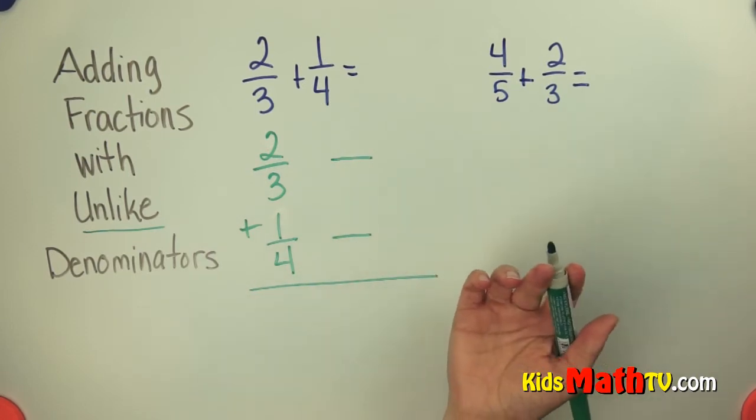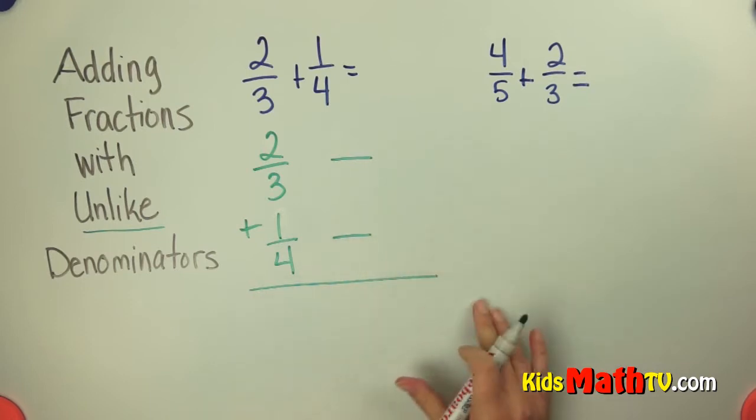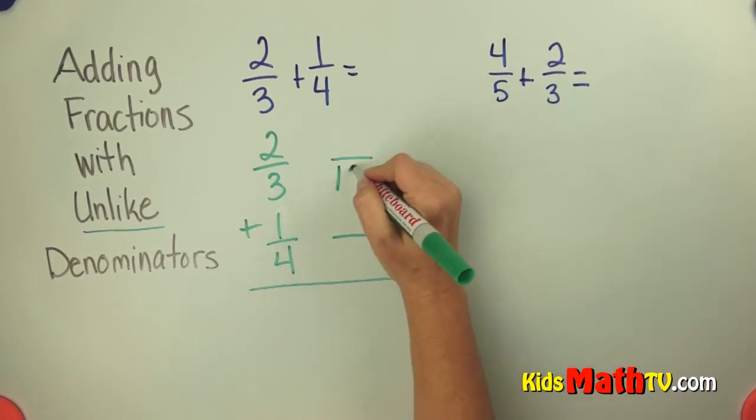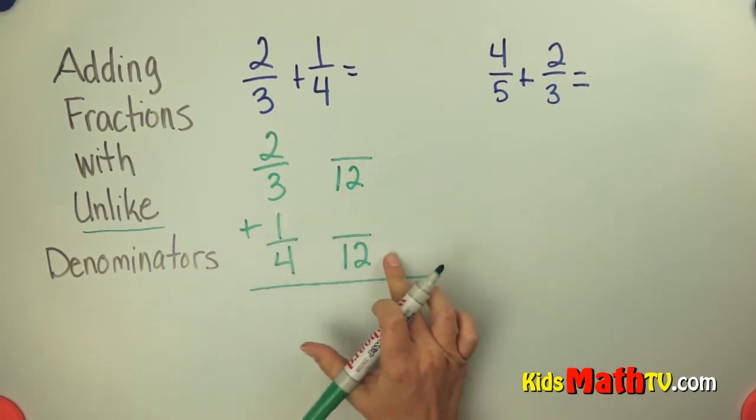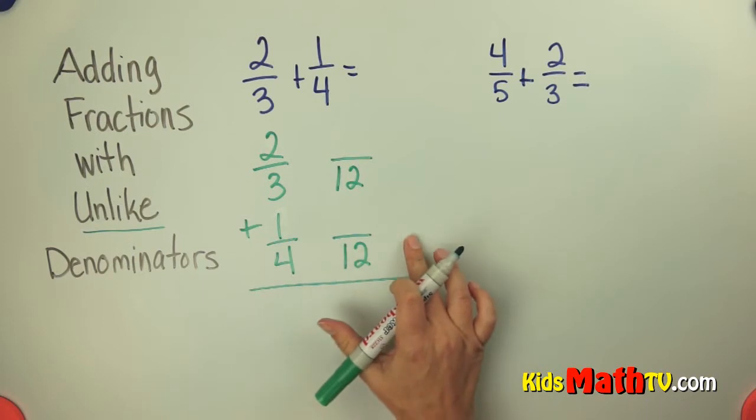I could use 24 and if I use 24 that would be fine. I would just reduce at the end. I'm going to go ahead and use 12. So my denominator is going to become 12. So I'm going to rename both of these fractions into 12ths.